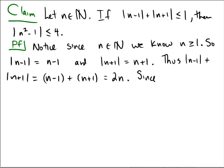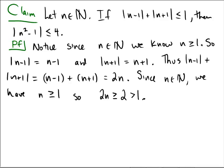Since n is a natural number, n is greater than or equal to 1, so 2n is greater than or equal to 2, which is strictly greater than 1. Notice that the antecedent states that the sum of those absolute values is less than or equal to 1, but we just showed that for all natural numbers n, the sum is actually greater than 1. Therefore, the antecedent is false.